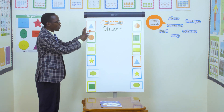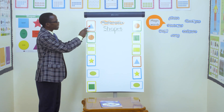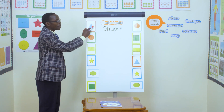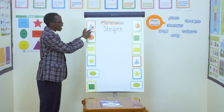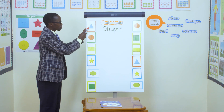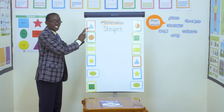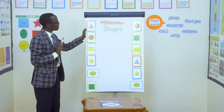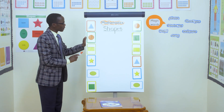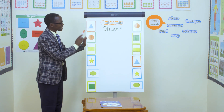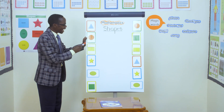Say triangle. Very good. And it usually has how many sides? Three. One, two, three. Triangle. Very good. Let's go to the other one. We call it circle.